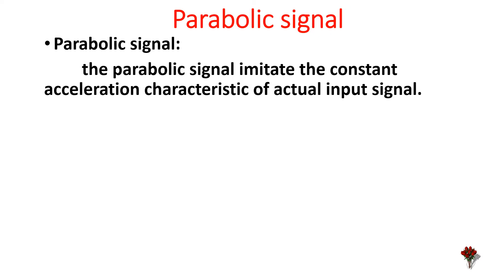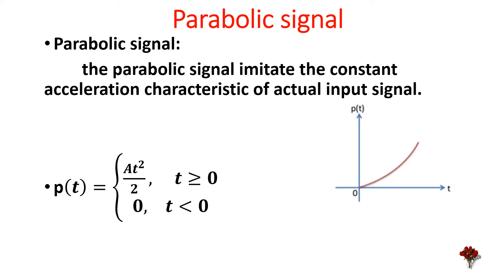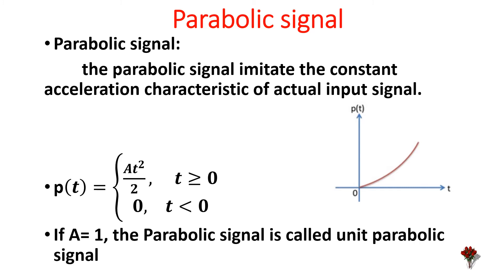Parabolic signal. The parabolic signal imitates the constant acceleration characteristic of the actual input signal. Mathematically, the parabolic signal is represented as p(t) = at²/2 for t ≥ 0, and p(t) = 0 for t < 0. If a = 1, the parabolic signal is called the unit parabolic signal.